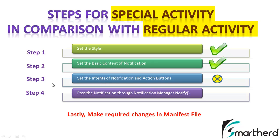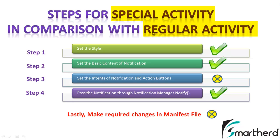So step 3 is not common to both cases. Step 4 — passing the notification through the notification manager notify method — is also the same in both cases. The last step is to make the required changes in the manifest file. Here there is a huge difference between the manifest codes of special activity and regular activity. We will check out each and every step of building the notification in detail, and you will be able to compare the differences in codes between special activity and regular activity.